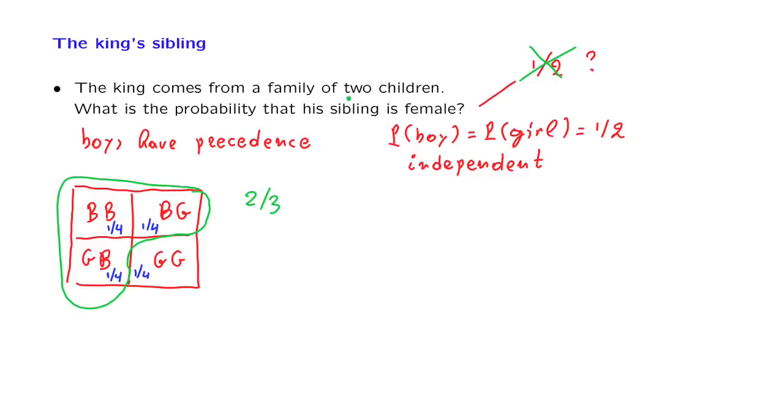We assume that the royal family decided to have exactly two children. So the number 2 that we have here is not random. It was something that was predetermined. Once they decided to have the two children, they had them.